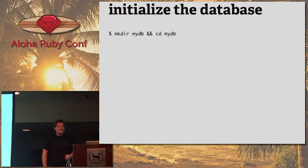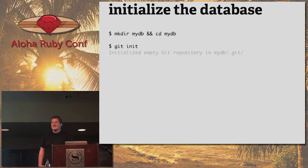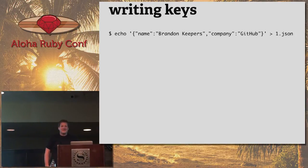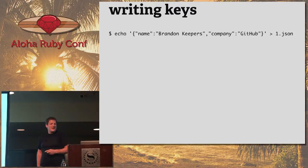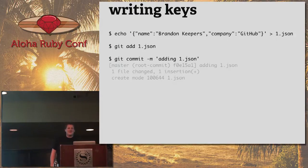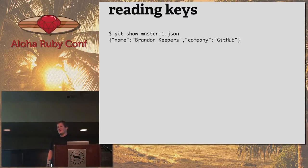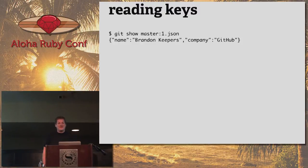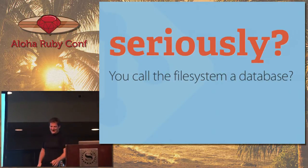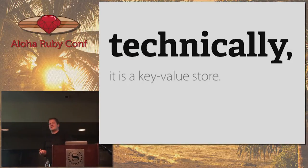Git 101. We initialize the database — make a directory, CD into it, call `git init` to create a new database. We can then write stuff to our database. In this case I'll store JSON: I echo a JSON string into a file, add that file, and then commit. We added data to our database. And then we can read that data back out by saying `git show` on the file we just added. That's how you use Git as a database.